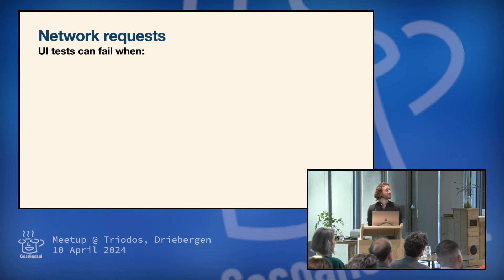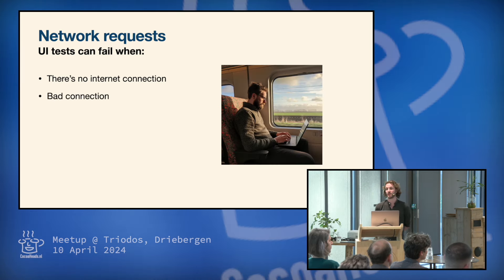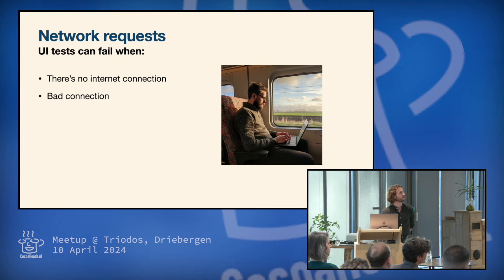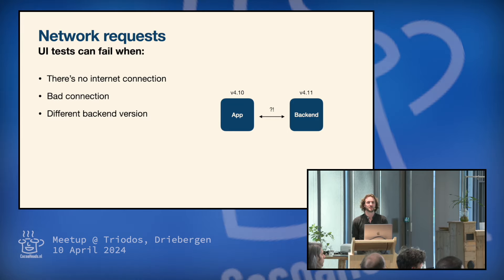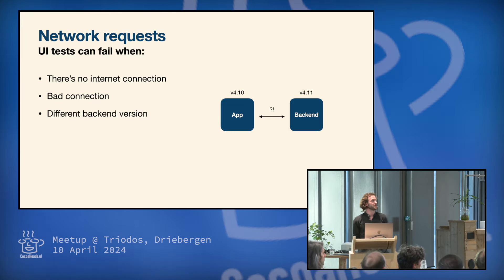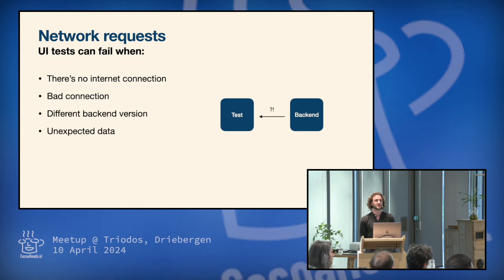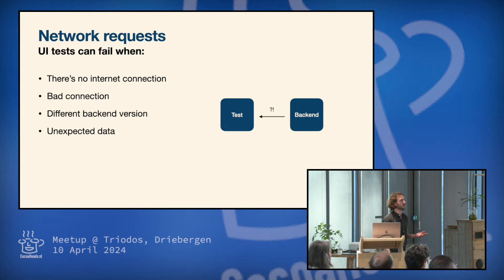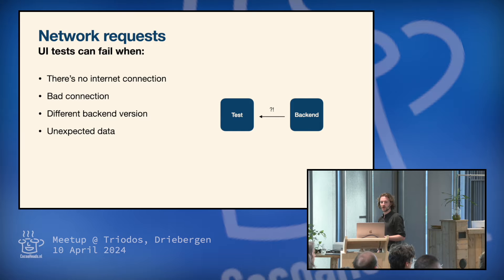So these network requests, they can fail when, for example, there's no internet connection. So you want to run your test, but you're on the beach — that doesn't work. Or maybe you're on a train getting to a meetup. They can also fail when the backend that you're using for your UI test has a different API spec and it's just returning different data than your app expects. Or when the backend just returns different data than you expect because maybe you want to log in a user that's not registered on the backend, or maybe you want to register a user, but the user account is already existing in the backend.